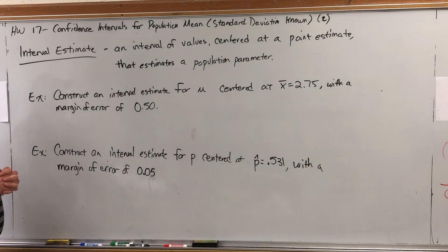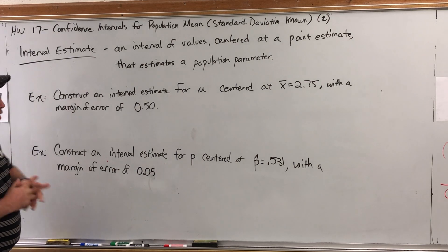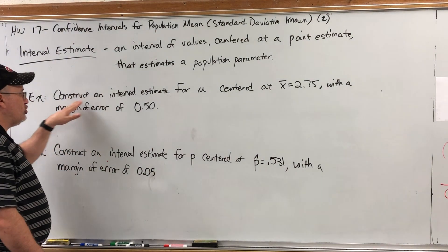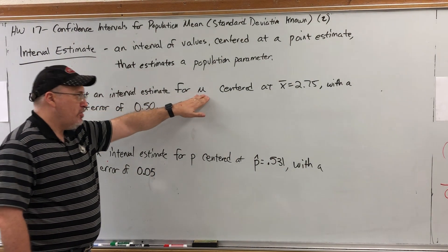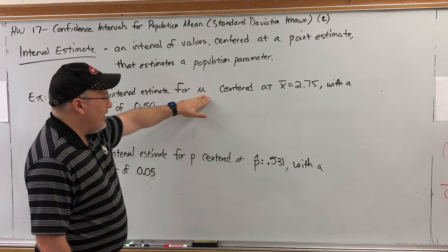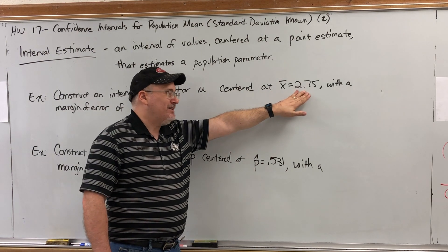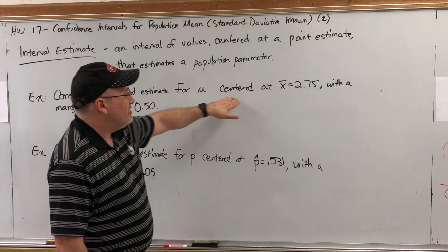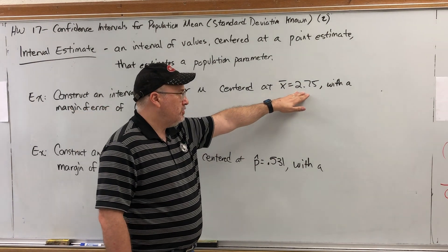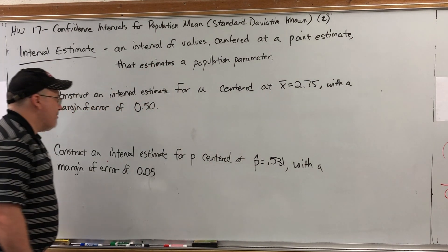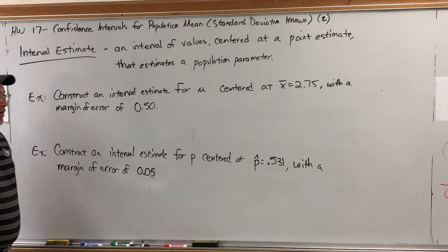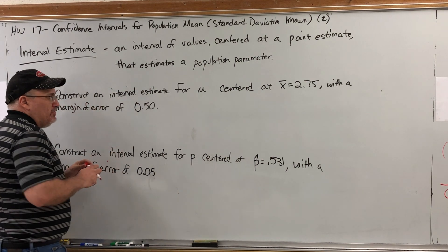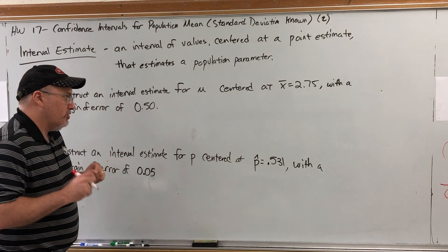For example, let's go back to the GPA example where we had a point estimate of 2.75. Let's construct an interval estimate for mu centered at a sample mean of 2.75 with a margin of error of 0.50. Now what do I mean by margin of error and what do I mean by an interval centered at a value?